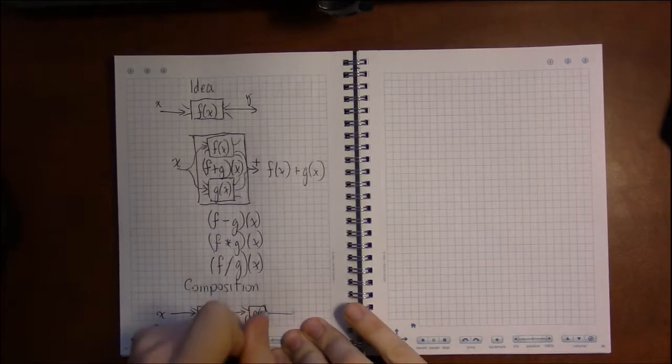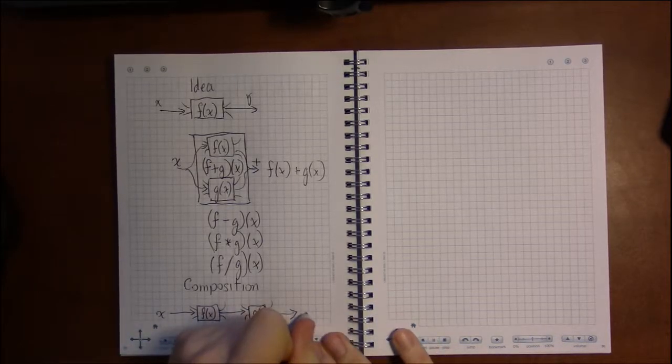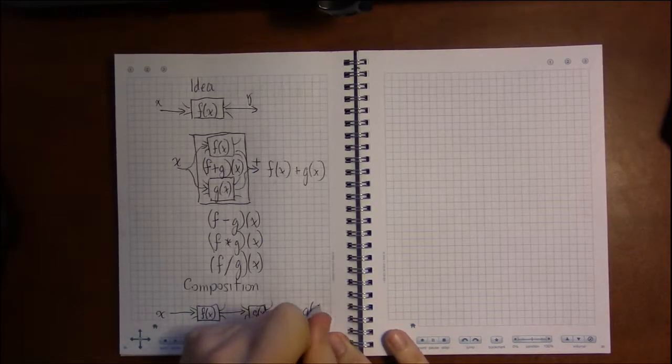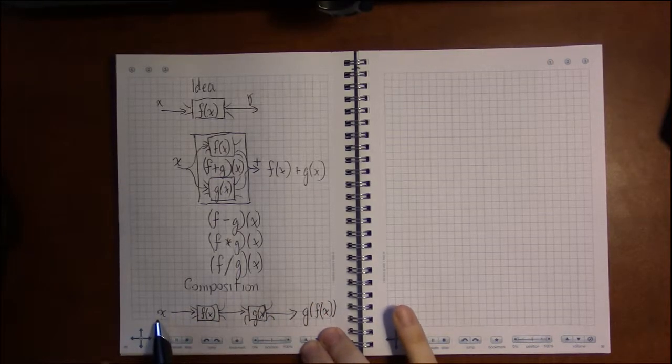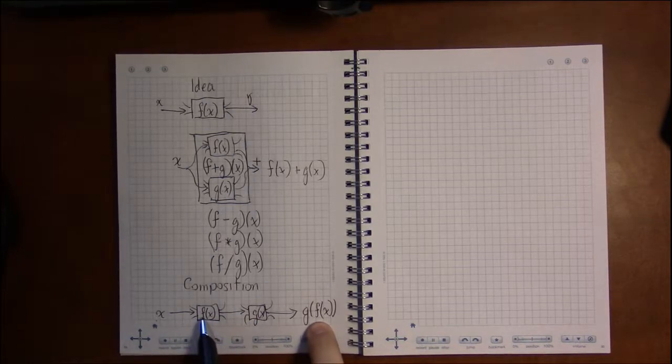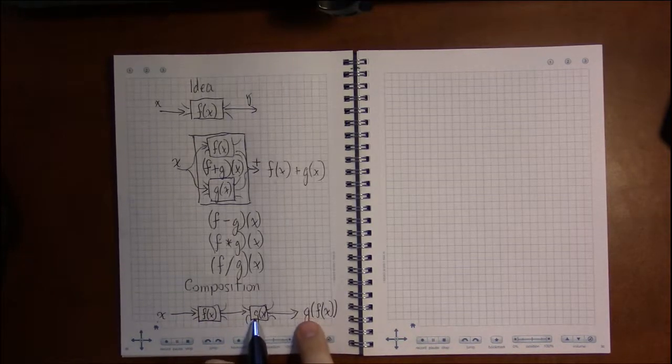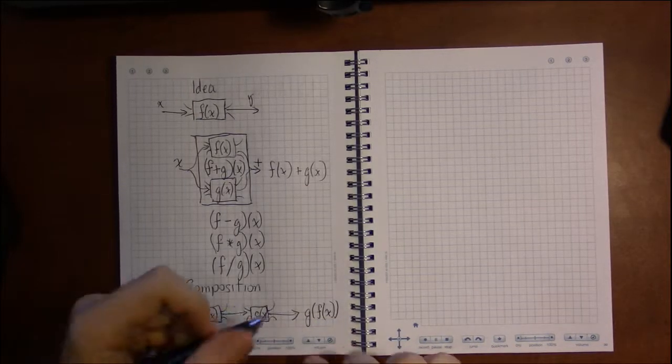And then whatever we get out of the g of x machine is our y value. This is g of f of x. We took an x value, we ran it through f, and then we ran that output through g. And that gets us g of f of x.